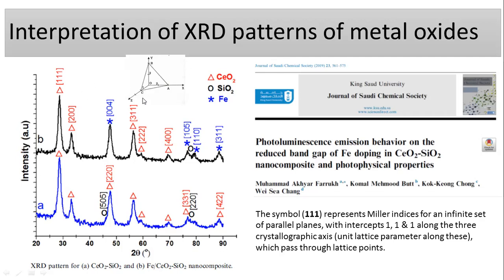So the first question is: how can you confirm that you are having the crystals — the crystal pattern — of cerium oxide, silicon oxide, or iron? This is the data already displayed, and here these values are called the Miller indices, or we call it the HKL value. One example has been explained here.